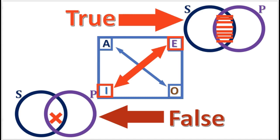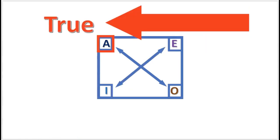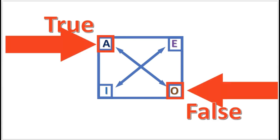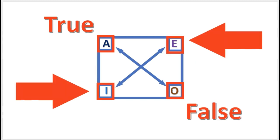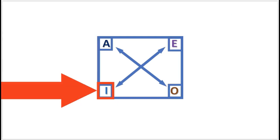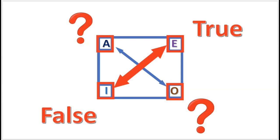When two statements are contradictory, it means that they necessarily have opposite truth values. So if a certain A proposition is true, then the corresponding O proposition is necessarily false. Since these propositions are not related to the E and I propositions, the E and I propositions have undetermined truth value. The undetermined truth value can be represented with a question mark. And if a certain I proposition is false, then the corresponding E proposition is necessarily true. The A and O propositions have undetermined truth value.